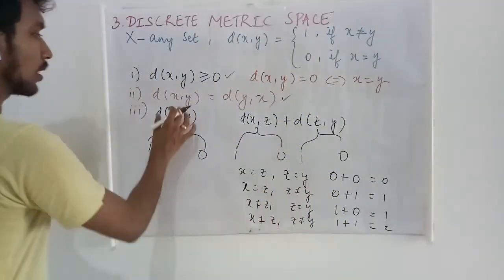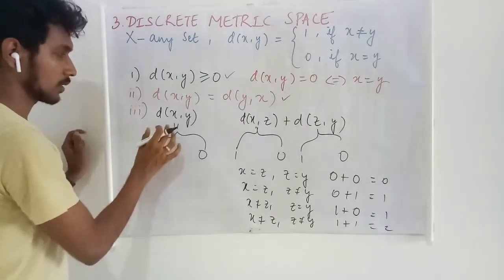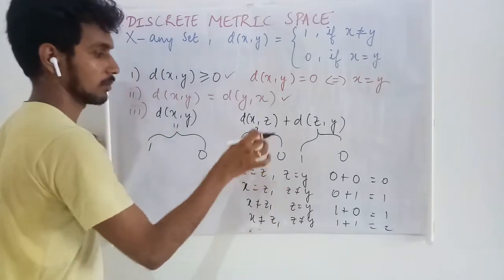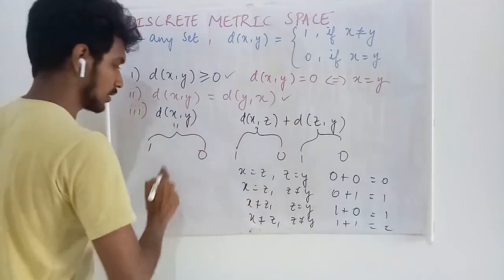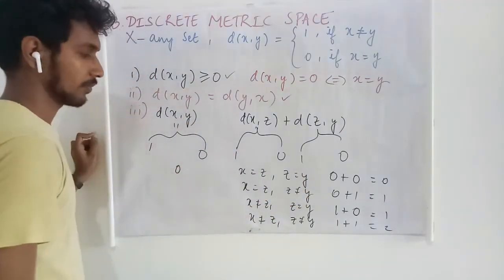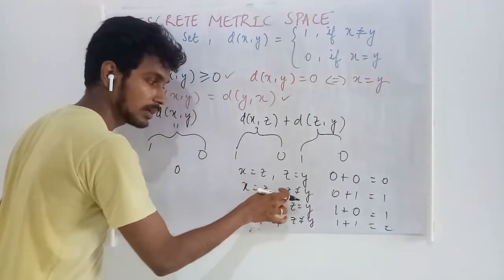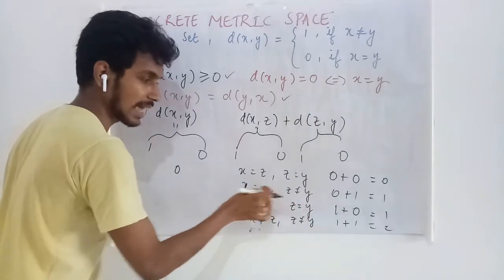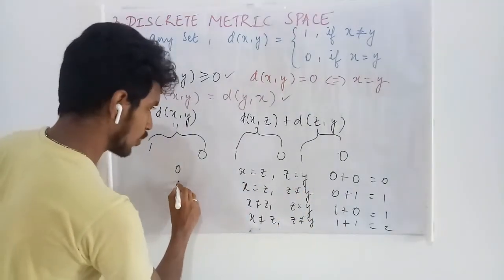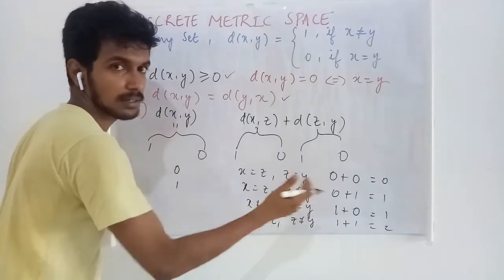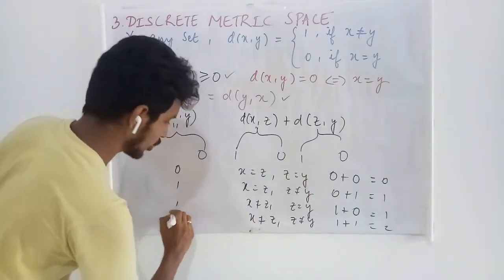In these cases, what will be the value of this? We have assumed x and z are the same and z and y are the same. In this case, x and y are the same. Therefore, we will get 0. And in this case, we have assumed x and z are the same, but z and y are different, which means x and y are different. We will get 1. Here also, the same applies in the reverse way. Here also, we are going to get 1.